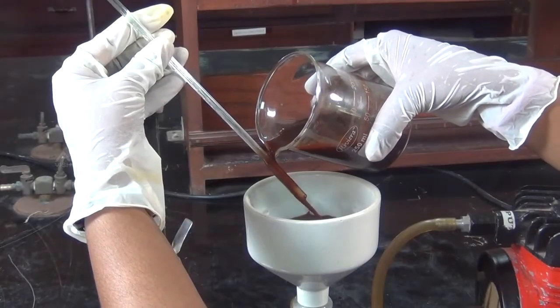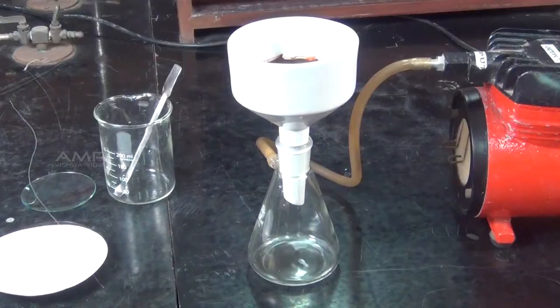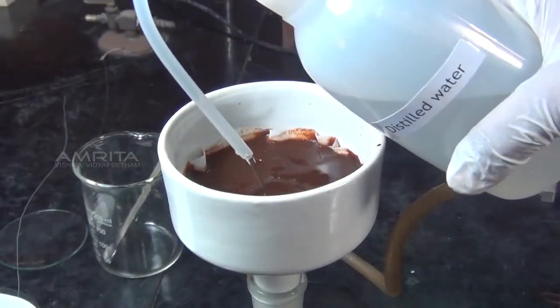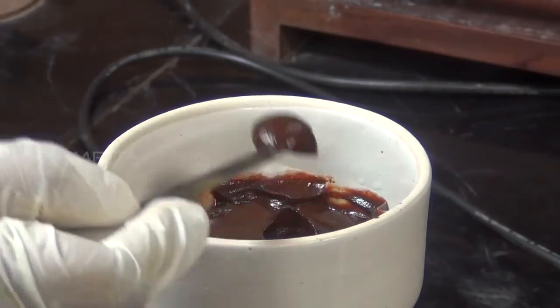Filter the precipitate of ferric hydroxide so formed through a Buchner funnel. Wash the precipitate with distilled water and transfer it into a watch glass.